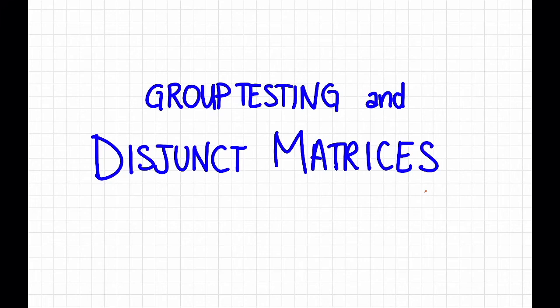In a previous video, we introduced group testing. In this video, we'll define the notion of a disjunct matrix, which will give us the tools necessary to see a nice Reed-Solomon based solution to the group testing problem.